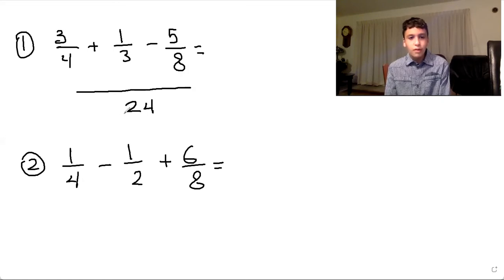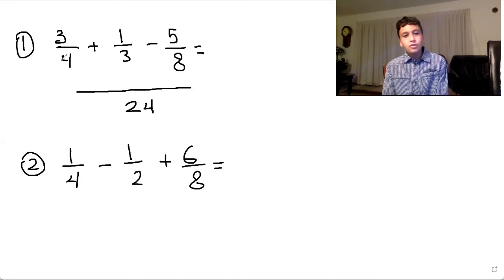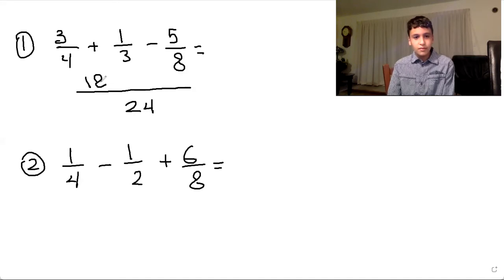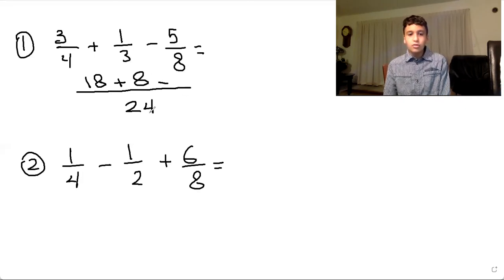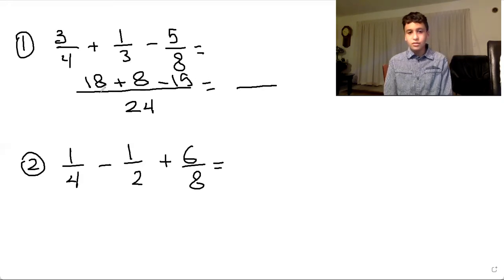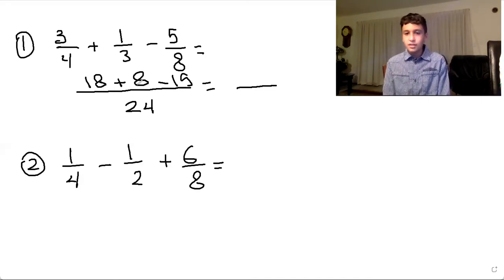So we do 24 divided by four, which gives you six. Then we do six times three, which gives you 18, and put a plus sign next to it. Then we do 24 divided by three, which gives you eight, and eight times one gives you eight, with a minus sign next to it. Then 24 divided by eight gives you three, and three times five gives you 15. So we do 18 plus eight, which gives you 26, then minus 15, and that gives you 11 over 24. And you always want to leave the common denominator the same.